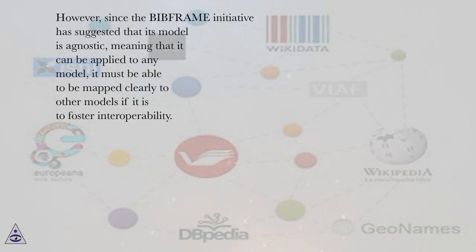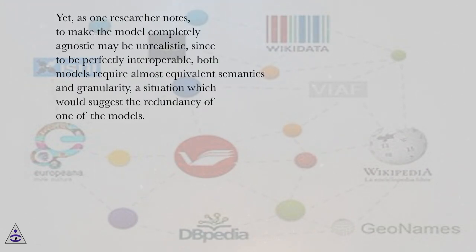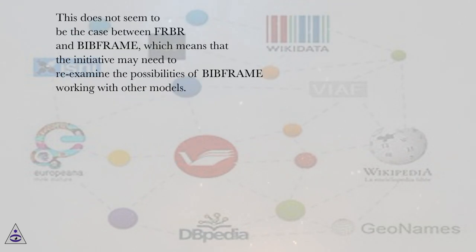However, since the BIBFRAME initiative has suggested that its model is agnostic — meaning that it can be applied to any model — it must be able to be mapped clearly to other models if it is to foster interoperability. Yet, as one researcher notes, to make the model completely agnostic may be unrealistic, since to be perfectly interoperable, both models require almost equivalent semantics and granularity, a situation which would suggest the redundancy of one of the models. This does not seem to be the case between FRBR and BIBFRAME, which means that the initiative may need to re-examine the possibilities of BIBFRAME working with other models.